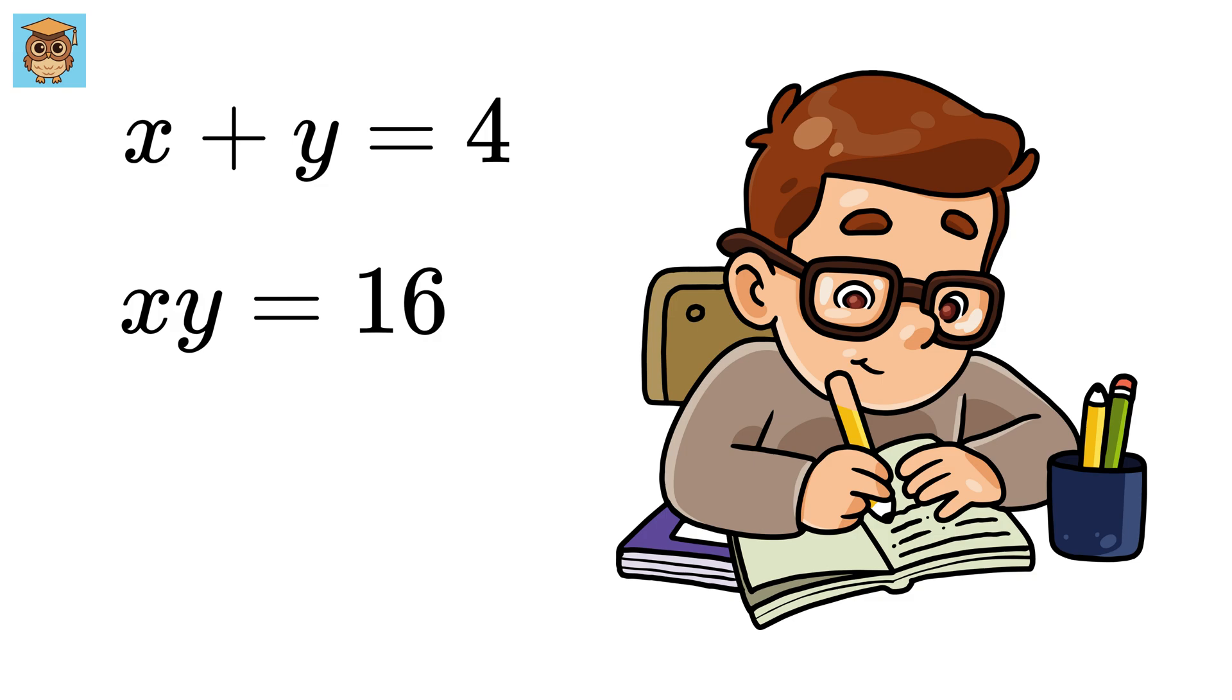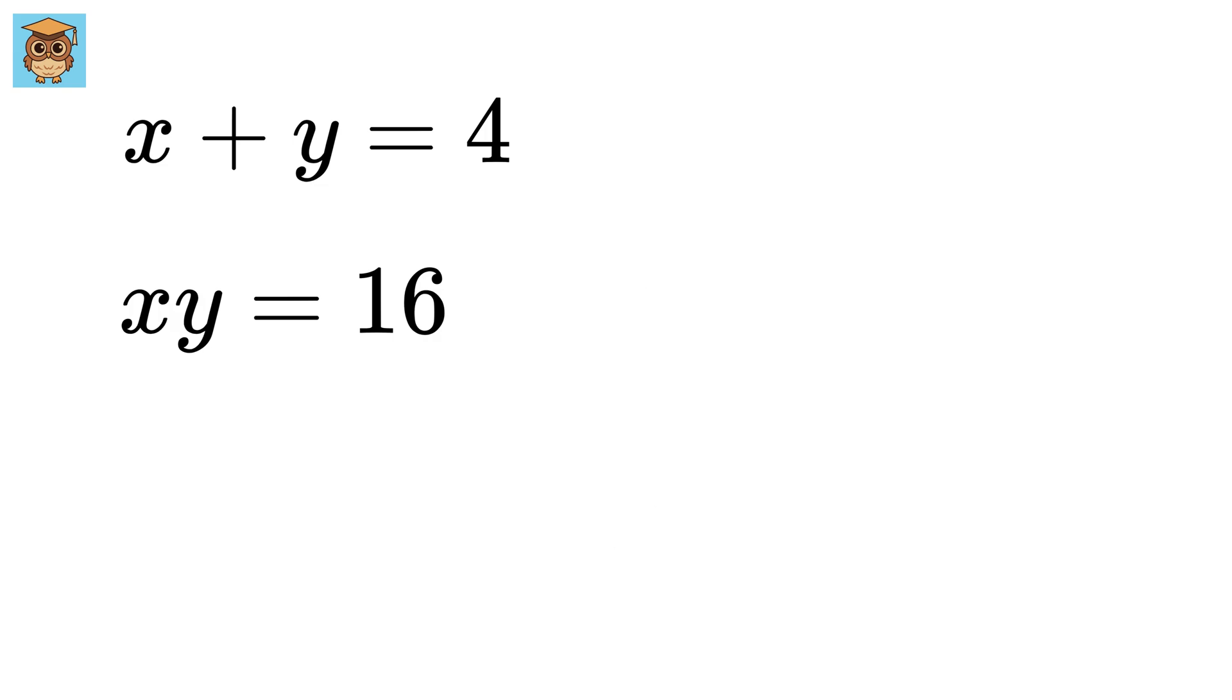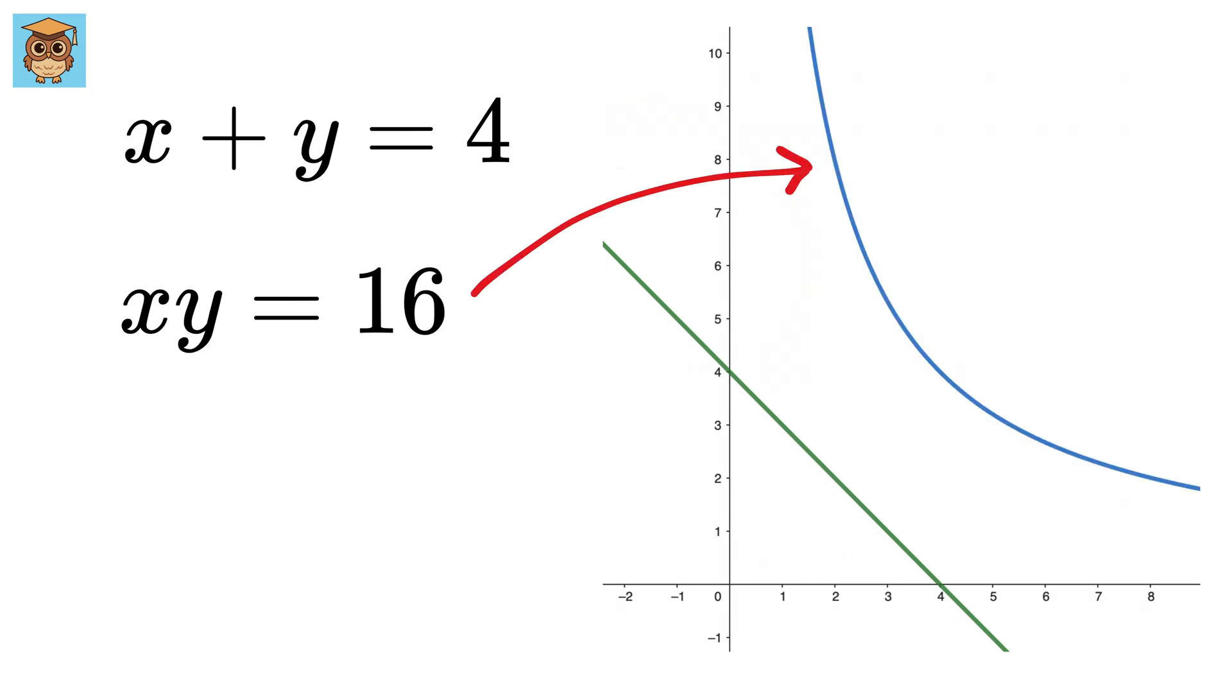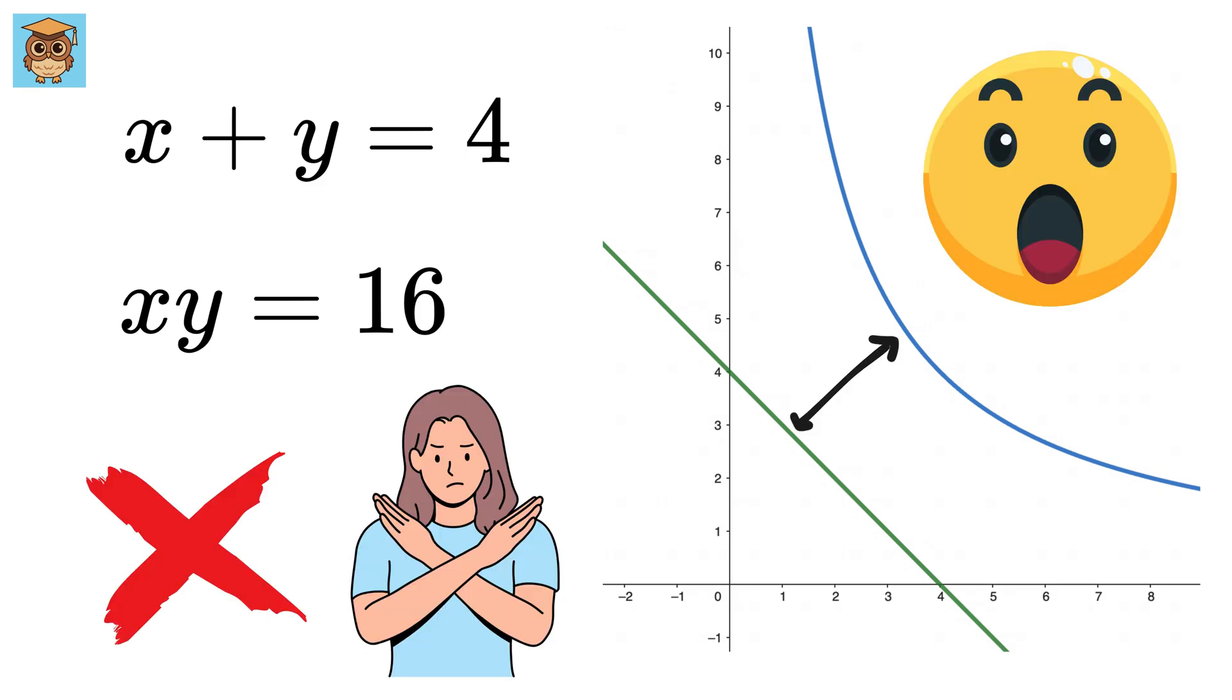Now, before we start finding the solution analytically, first let us draw the graph of x plus y equals 4 and xy equals 16. It will be like this. Oh, look, both these graphs do not intersect, so it means that it is impossible to find its solution.